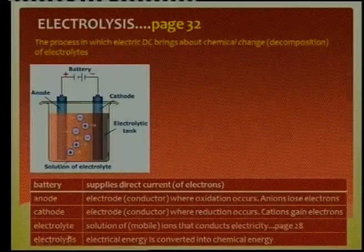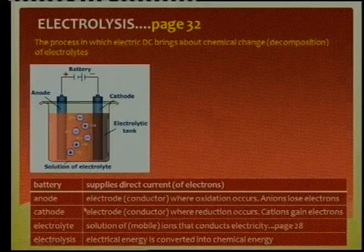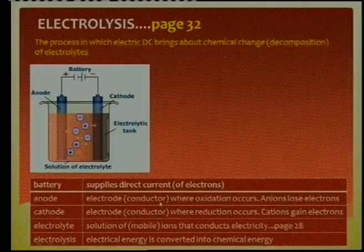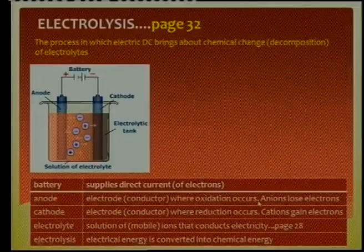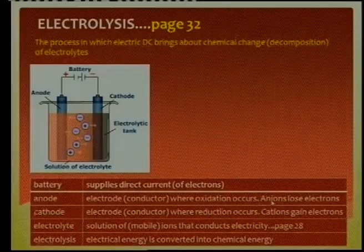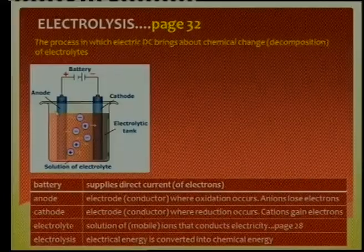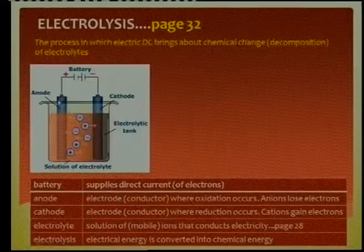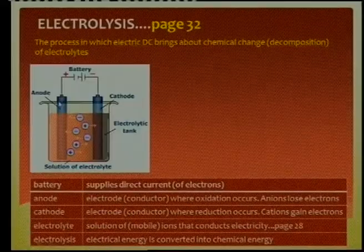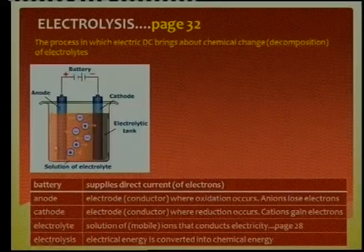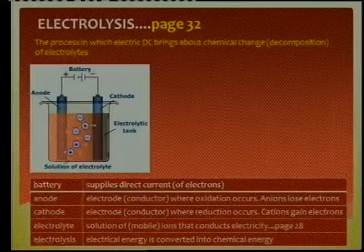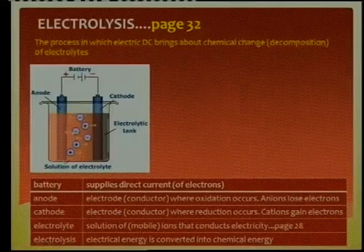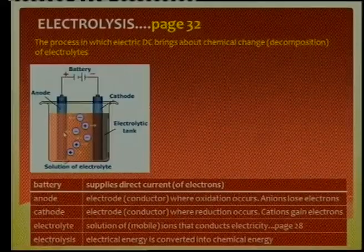What happens at the anode? The anode is an electrode or conductor where oxidation occurs. That means anions lose electrons — that's what the anode is. It is therefore the positive electrode, because it's connected to the positive side of the battery. It's also positive because it attracts the anions, the negative ions, who will lose electrons.